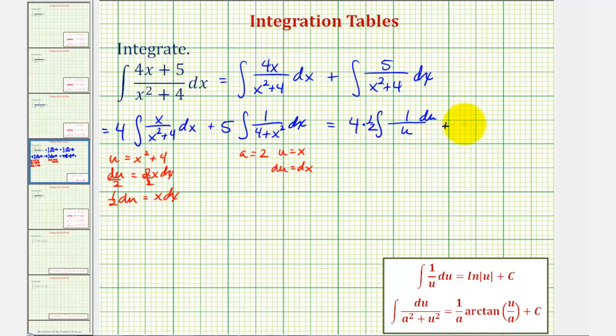And now for the second integral, we'll just write this as plus five times the integral of one divided by, if we want, we can write four as two squared, and plus x squared.